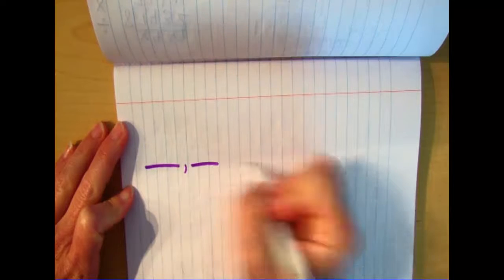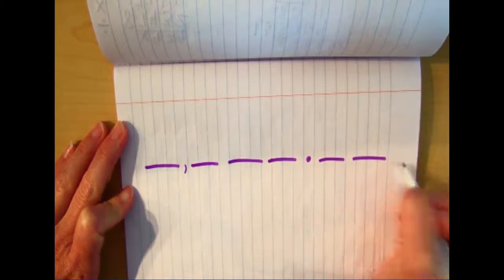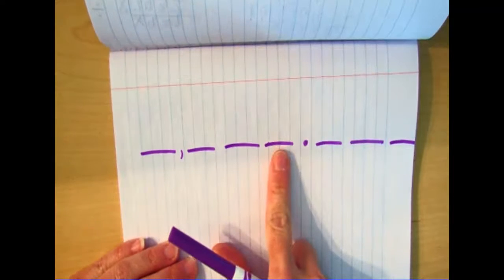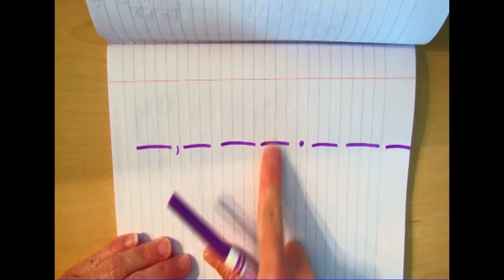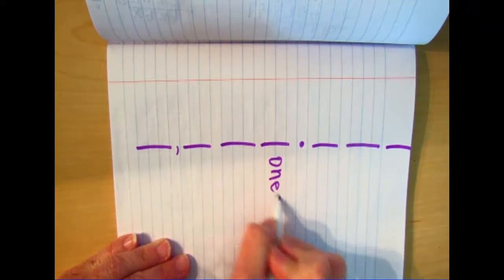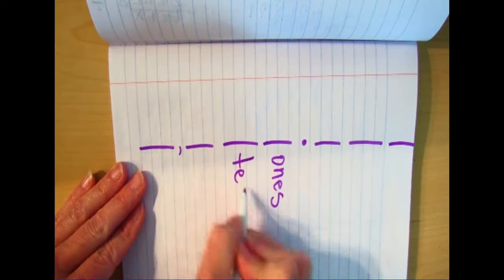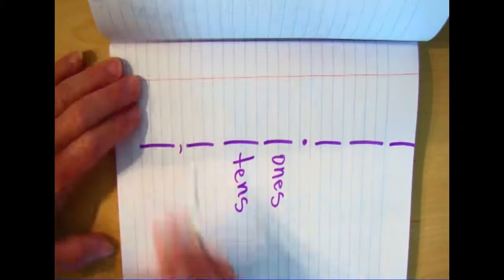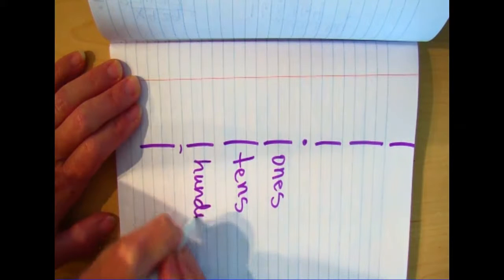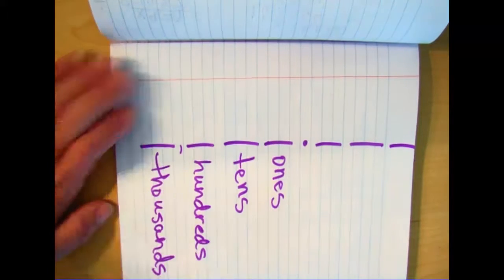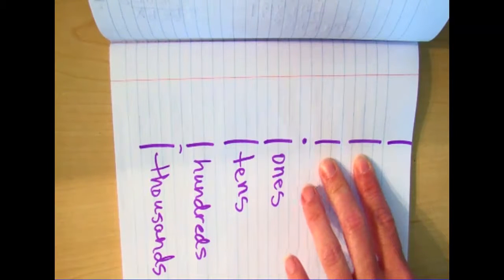We're going to review some place value spots that you've all already been taught. I turn my paper sideways — on the left side of the decimal, this is the ones place, then tens, then hundreds, and this is the thousands. In fourth grade they introduce two place value spots to you on the right side of the decimal.